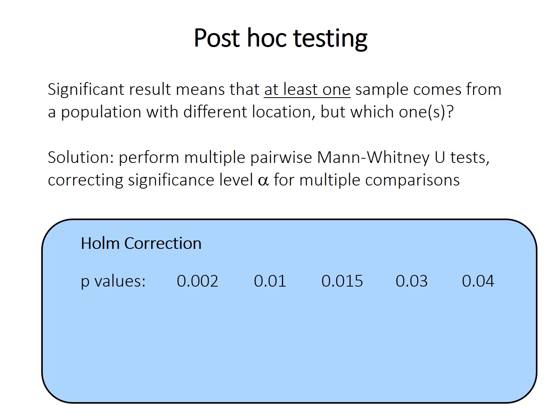One recommended method for correcting this is called the Holm correction. For example, if we ran five tests and got p-values in ascending order from smallest to largest, instead of comparing them all to 0.05, we use an adjusted alpha. The first comparison uses 0.05 divided by 5, then 0.05 divided by 4, 0.05 divided by 3, 0.05 divided by 2, and finally 0.05 divided by 1, which is 0.05. We compare sequentially: the first p-value is significant because it is less than 0.01.